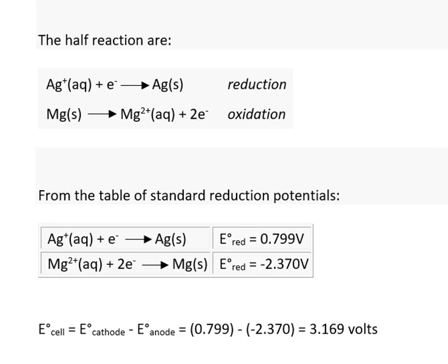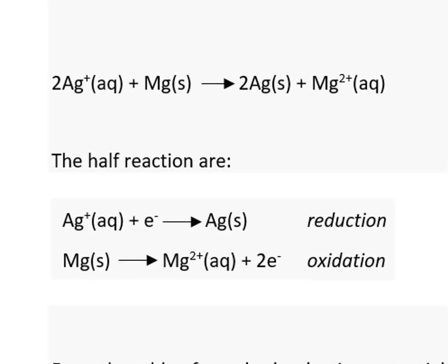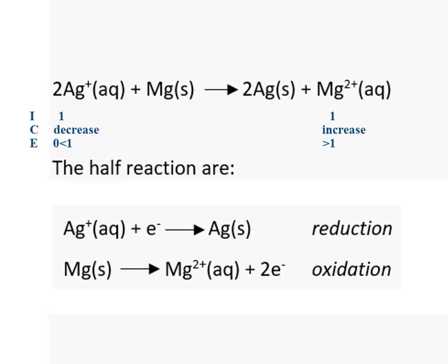So to remind you again, all solutes begin at 1 molar concentration, and as the reaction proceeds, the reactant concentration will decrease and the product concentration will increase. Because this is such a highly product favored reaction, once equilibrium has been attained, the concentration of the silver ion is likely to be extremely small.